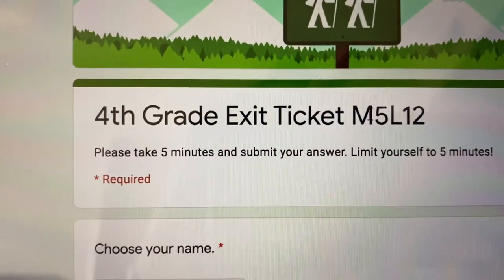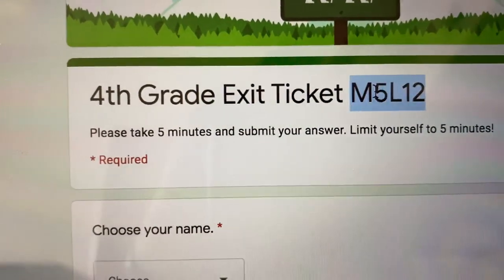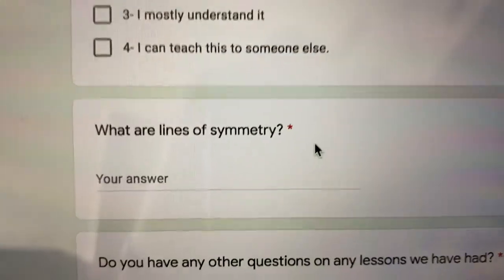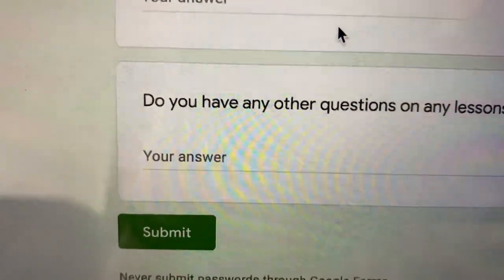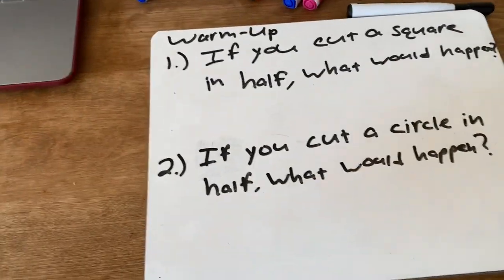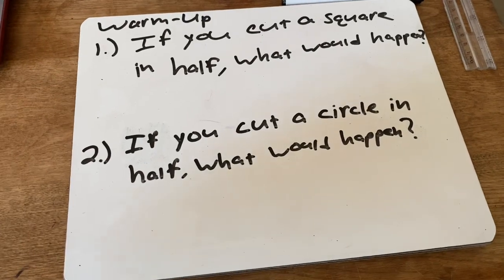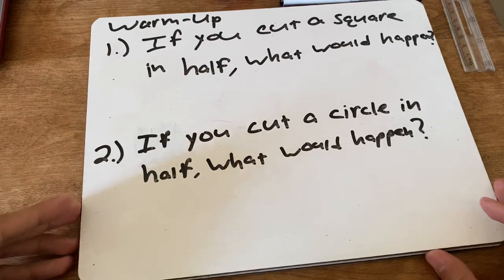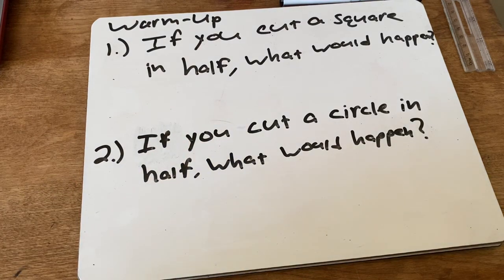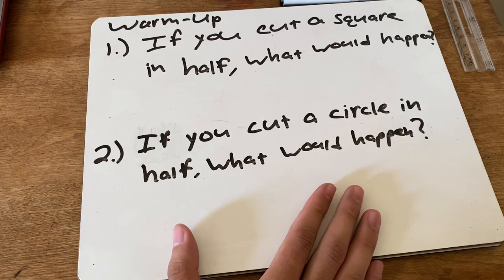Remember to complete today's exit ticket — it should say M5 L12. That is your exit ticket question for today; just hit submit. That's how I'm taking roll: if you complete it on time you are marked as present, if not you are marked as absent. Also, Miss Gillespie wanted me to remind you that your Google Meet will be Tuesdays and Thursdays at 12 p.m.